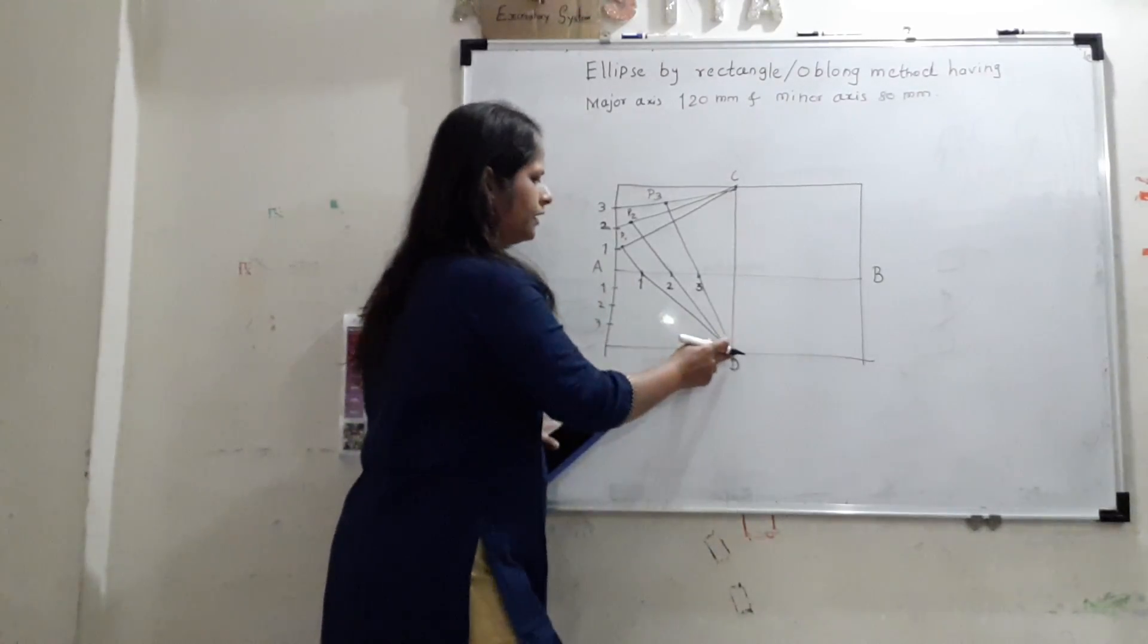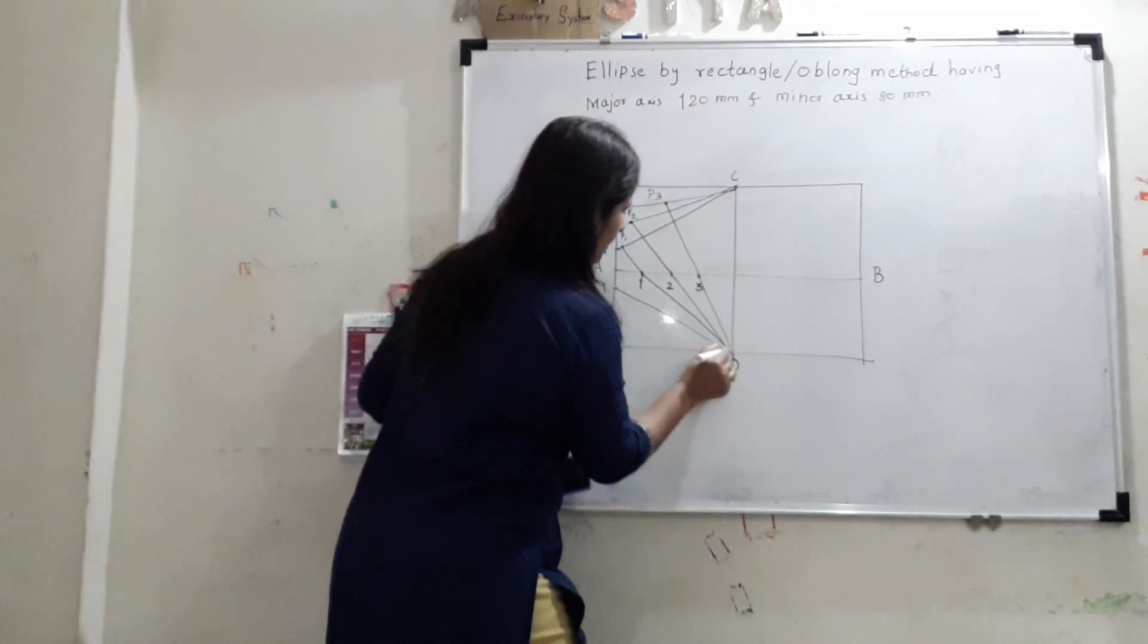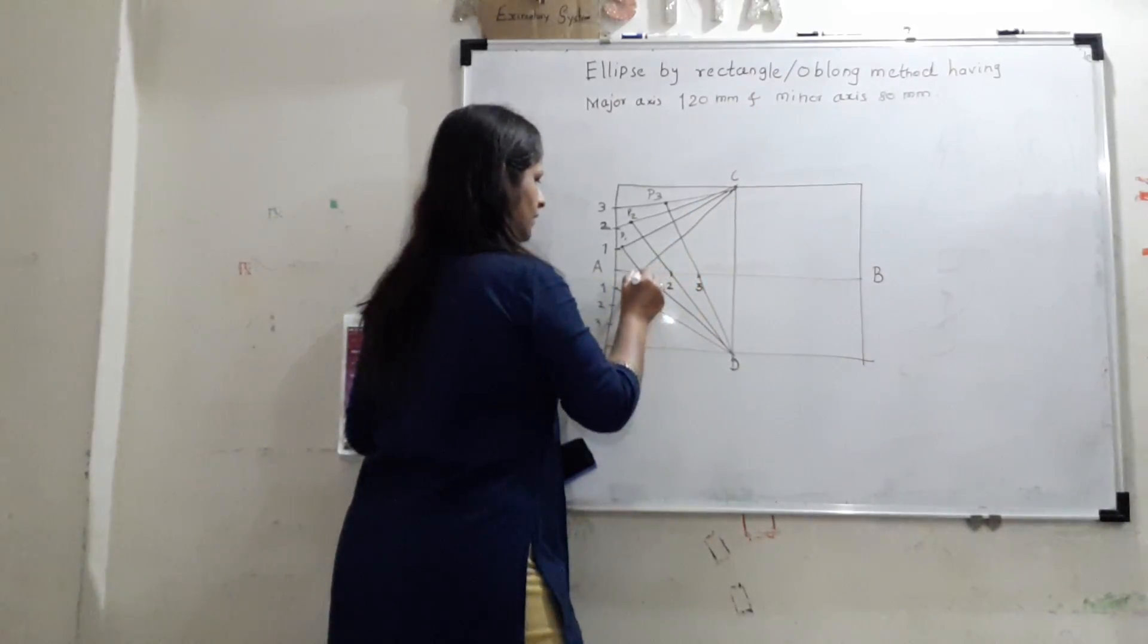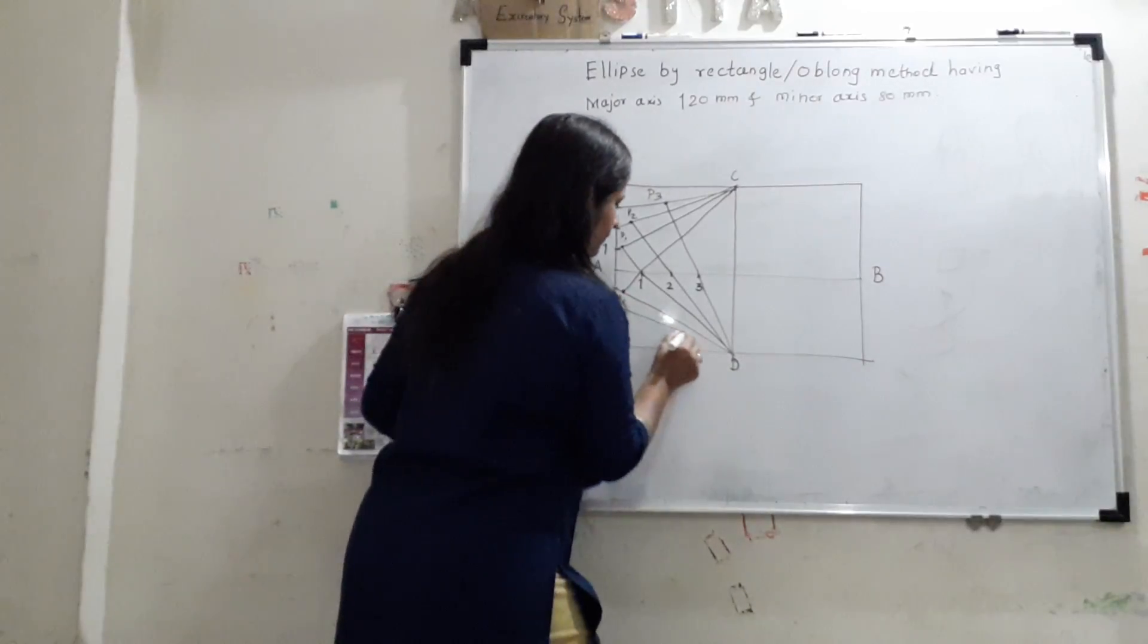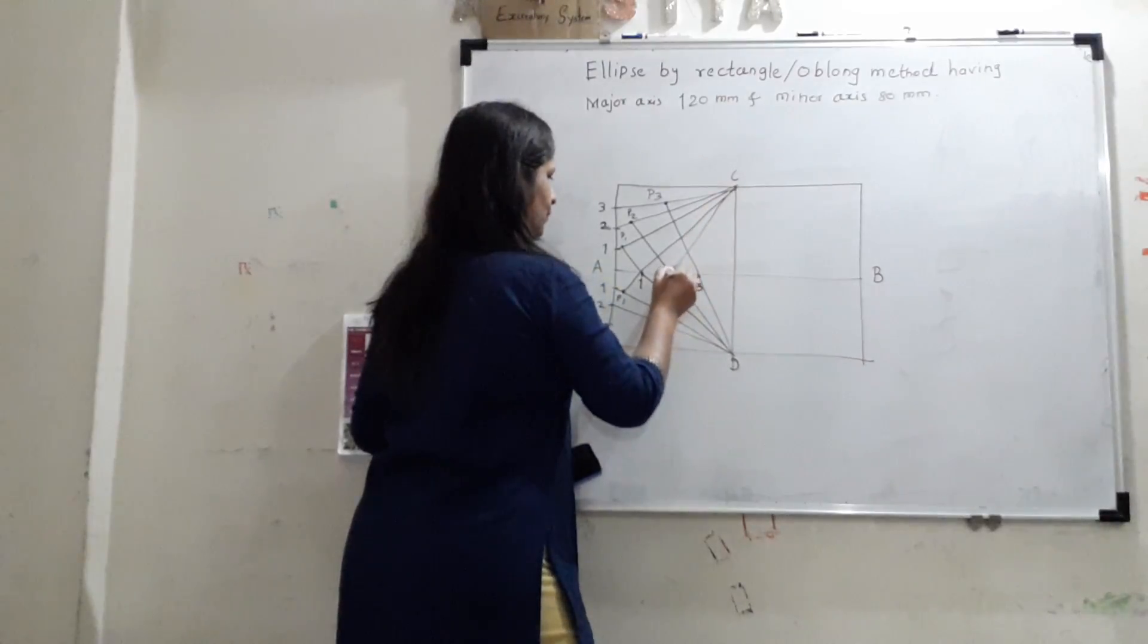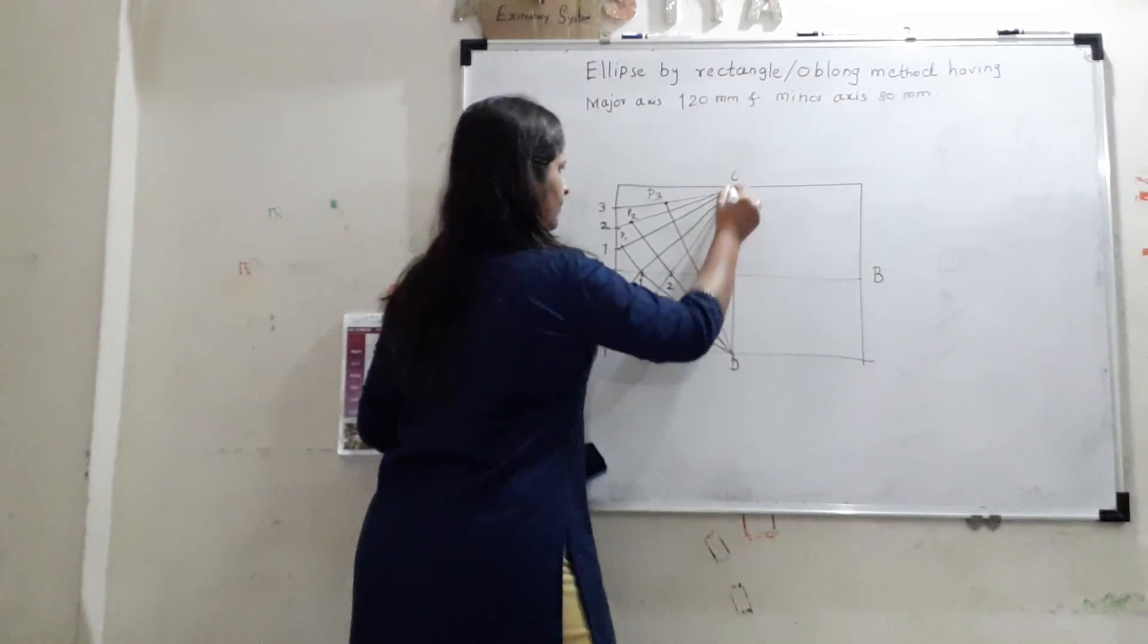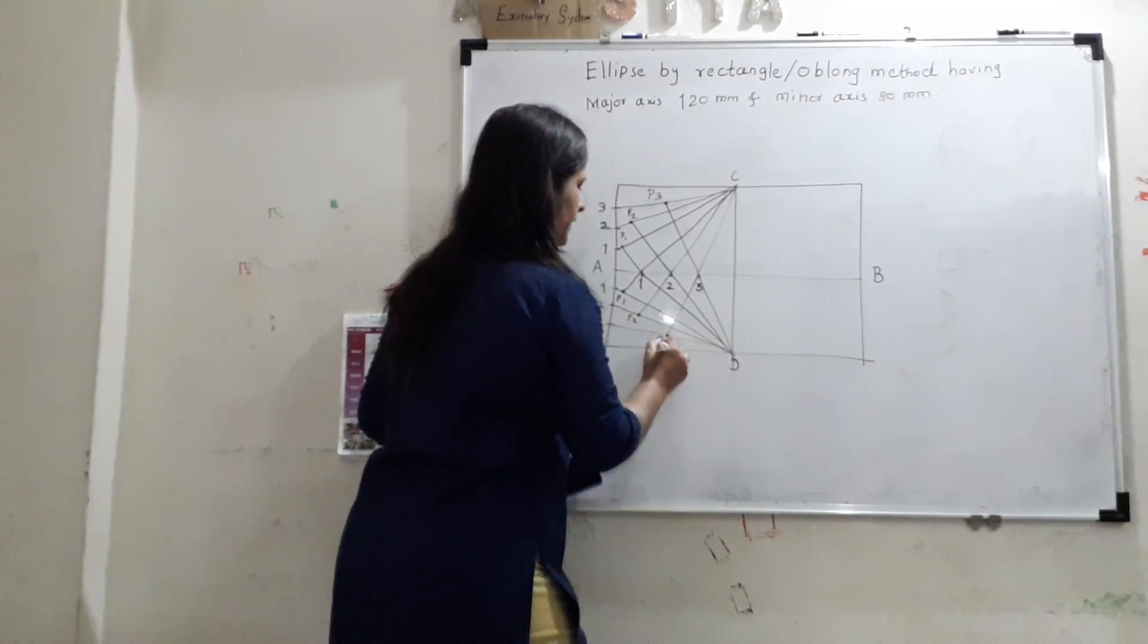We will join. In this construction, we will join D21 first. And to intersect D21, we should have C21. And extend it. We will get P1. Now draw D22. And to cut this, we will have C22. And extend it. So this will be point P2. Now D23. Join C23. And extend it. So we will get point P3.